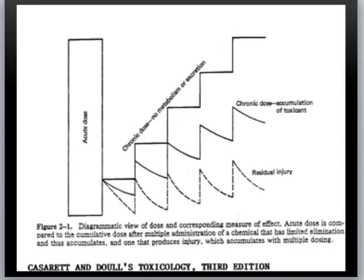These charts are taken from the Casarett and Doull's Toxicology textbook, third edition. This chart shows a dose of acute toxicity compared to a normal dose — chronic accumulation of the toxic substance in the body occurs gradually. Depending upon the duration of exposure — 1 month or 3 months — the dose increases and becomes equivalent to the toxic dose. When the chronic accumulated dose becomes equivalent to the lethal dose, it may produce its lethal effects silently.